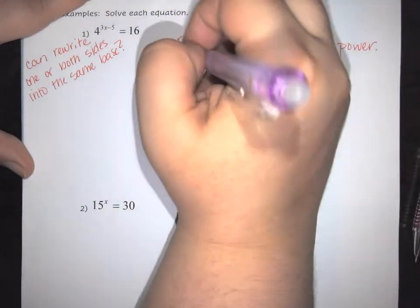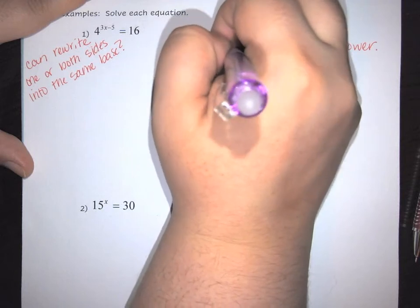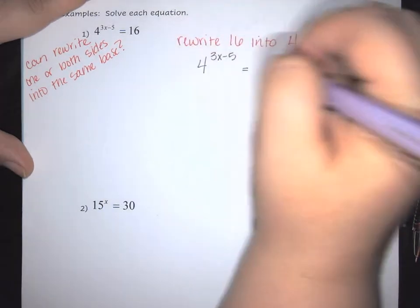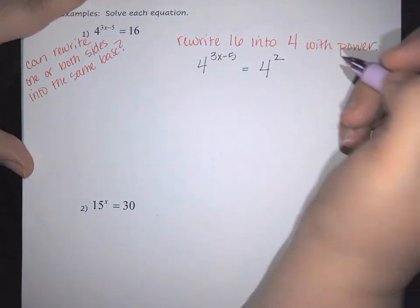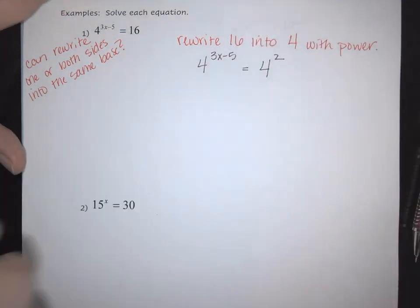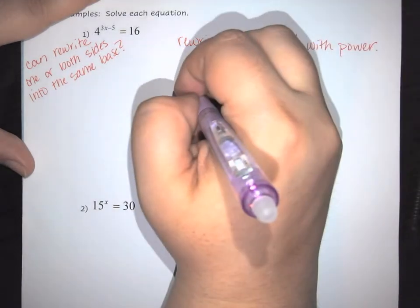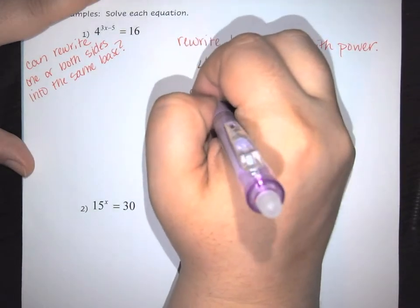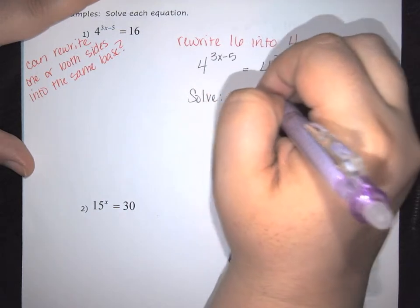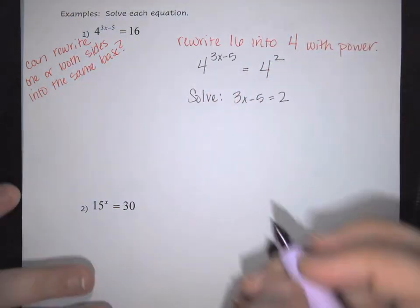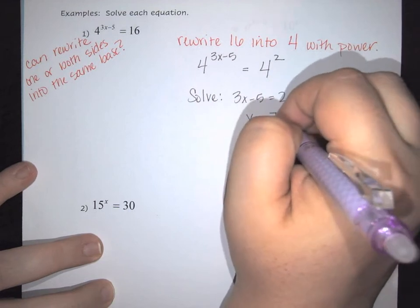So in this case, I have 4 to the 3x minus 5, which equals 4 squared. Because we can do that, we apply the rule: if the bases are the same, the powers are the same. So we solve 3x minus 5 equals 2, giving x equals 7 thirds.